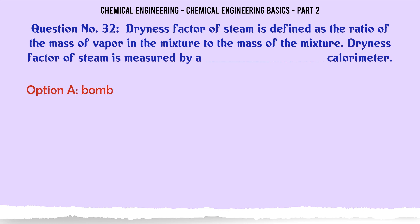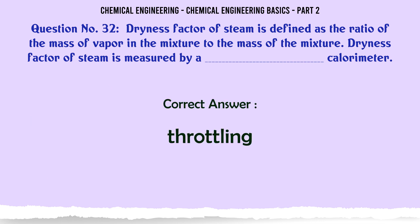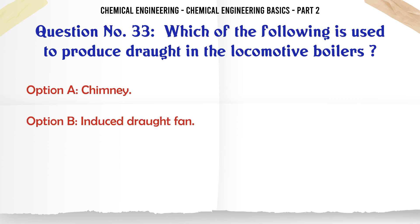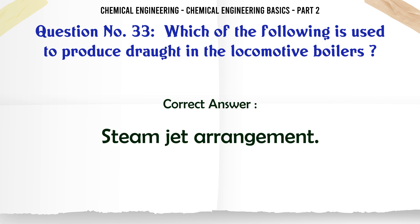Dryness factor of steam is defined as the ratio of the mass of vapor in the mixture to the mass of the mixture. Dryness factor of steam is measured by which calorimeter? a) bomb, b) throttling, c) Junkers, d) Boys. The correct answer is: throttling. Which of the following is used to produce drought in locomotive boilers? a) chimney, b) induced drought fan, c) forced drought fan, d) steam jet arrangement. The correct answer is: steam jet arrangement.